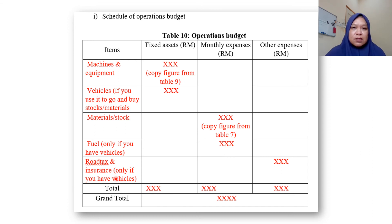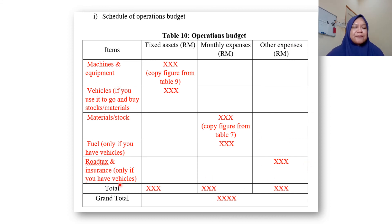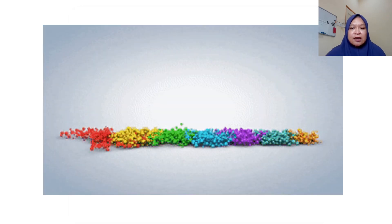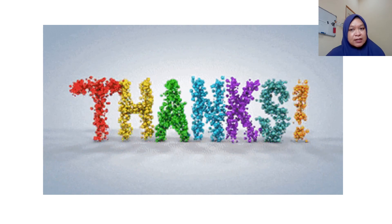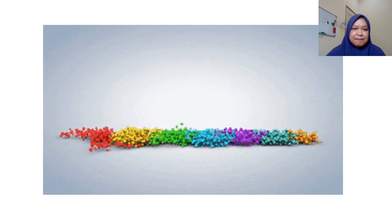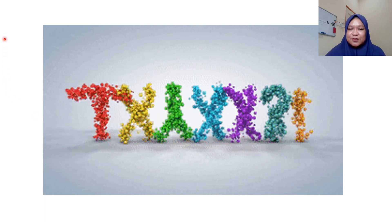Road tax and insurance are paid once a year, so put those under Other Expenses. If you have any other operation budget figures that should be included, just add them in — this is only an example. That's it for this chapter. Once done, you will have finished your Operation Plan. Thank you.